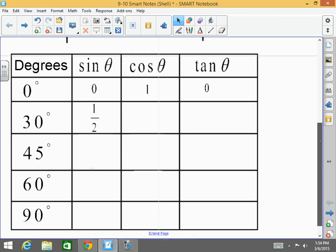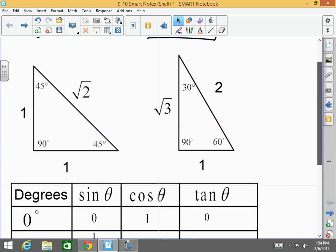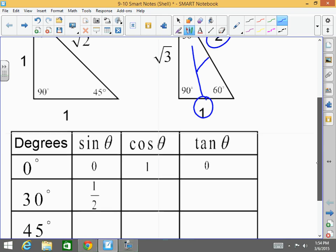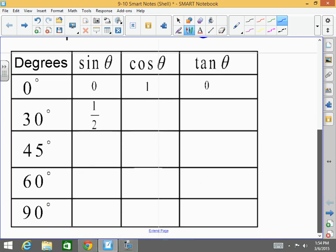I'm not going to bore you with how I got all of these, but just so you know, if you forget that, draw your 30-60-90 triangle in the unit circle. What's the sine of 30? Opposite over hypotenuse, 1 half. And that's how I'm deriving all of these values, guys.